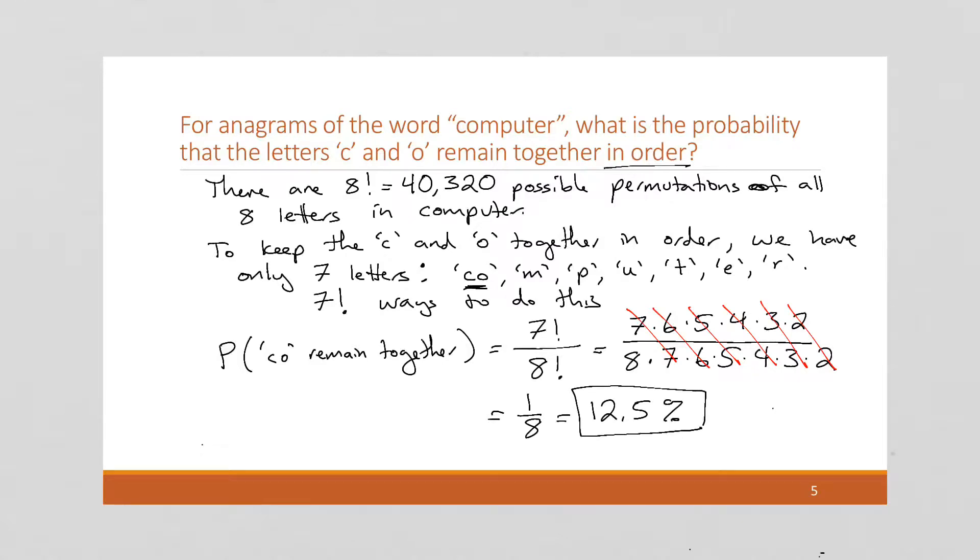So there is a 12.5% chance that if you had a computer program that created every possible permutation of the letters in the word computer, 12.5% of them will keep the C and the O together in order. So if you were to grab a random permutation out of that pot, you have a 12.5% chance of having the C and O together. Not that this really matters in any way, but it's just kind of an interesting puzzle.